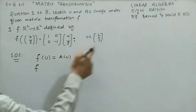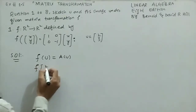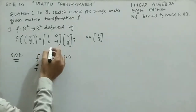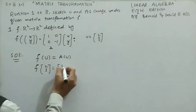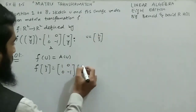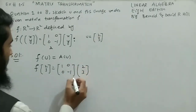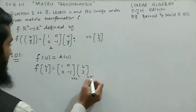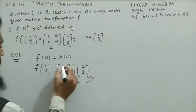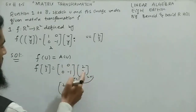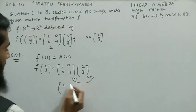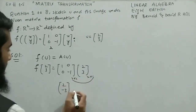Since u = (2,3), f(2,3) = A·u. Our matrix A is [[1,0],[0,-1]] multiplied by u = (2,3). This is a 2×2 matrix times a 2×1 matrix, giving a 2×1 result. Multiplying: 1×2 + 0×3 = 2, and 0×2 + (-1)×3 = -3. So the result is (2, -3).